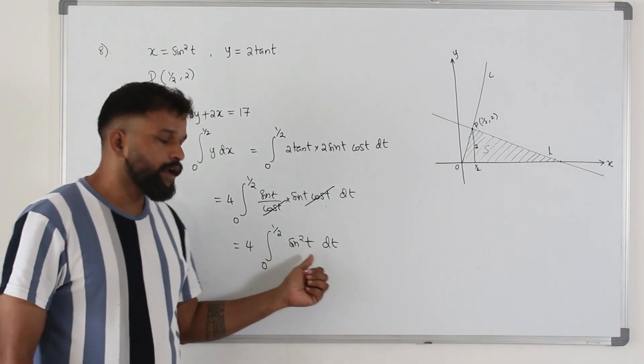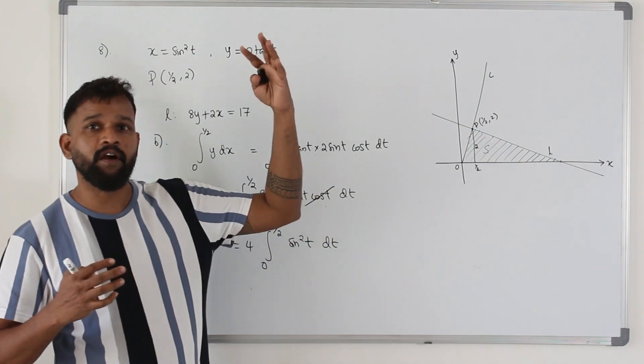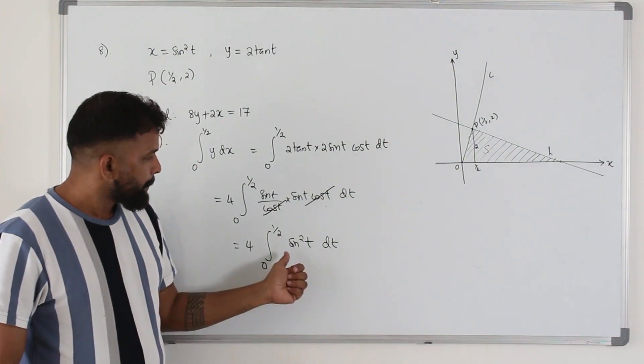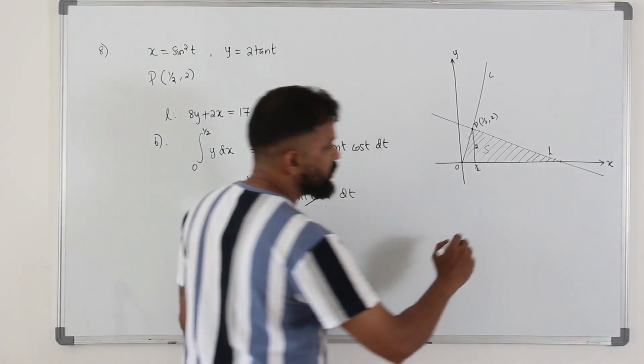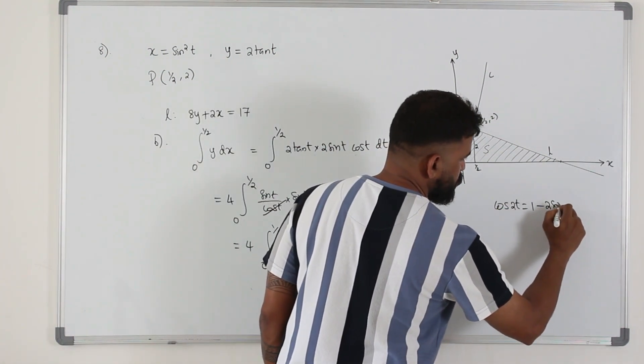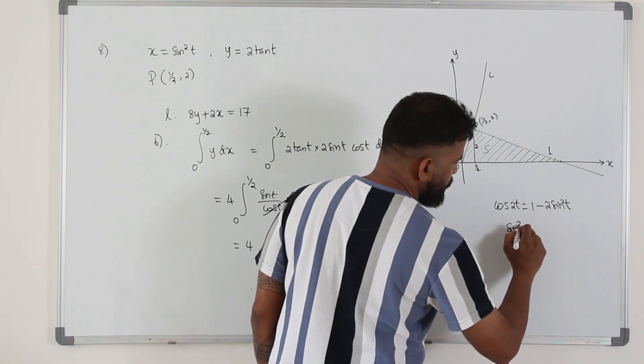This sine square t is one of the special integrals. I have explained this in a separate video. I have consolidated about 10 special integrals. So when you have sine square t, you use this: cos 2t is 1 minus 2 sine square t.